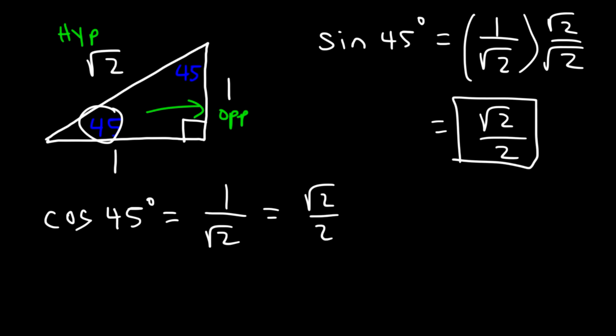What about tangent of 45 degrees? Tangent is opposite divided by the adjacent side, so tangent is going to be 1 divided by 1, which is 1. So tan 45 is 1.